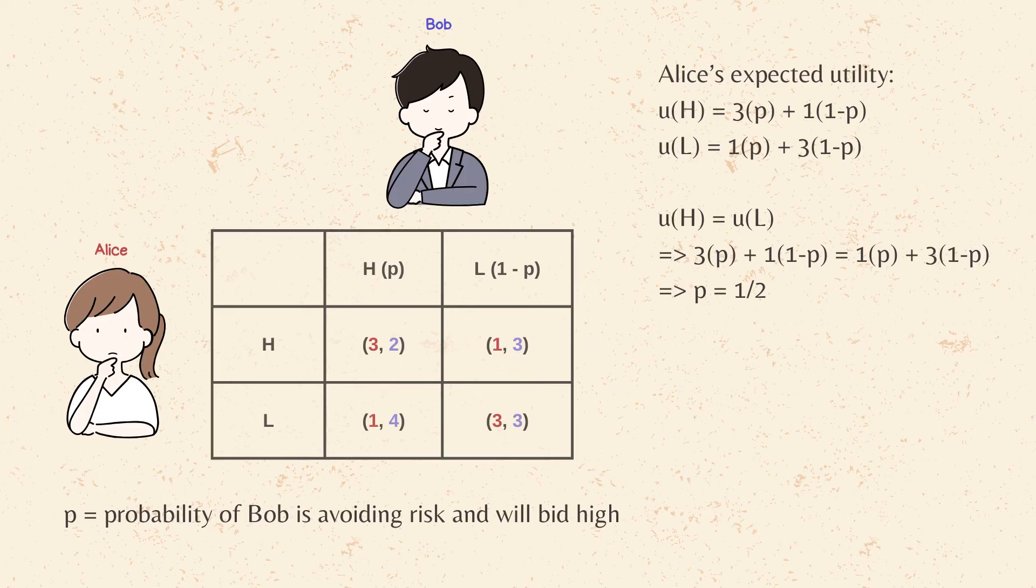With P, the probability of Bob of failing risk and choosing to bid high, if Alice believes that P is lower than half, the probability of her choosing to bid high is zero, which means she should choose to bid low. But if P is higher than half, she should choose to bid high.